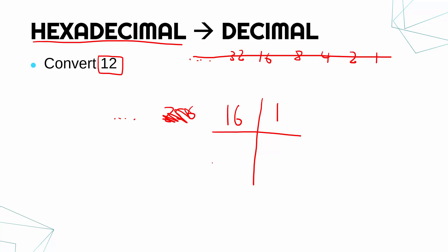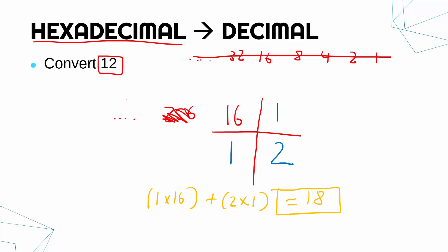Once you have the table written in, you can write in your number 1 and 2. Now you might be able to see what you do to get the answer — you must multiply the row by the heading. So I've got 1 times 16, plus 2 times 1. So 16 plus 2 is 18. The answer is 18. So weirdly, what looks like 12 but isn't 12 is actually equal to 18 in hexadecimal. It does make sense if you consider the 1 on the left is in hex.